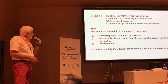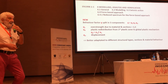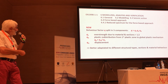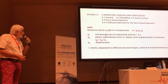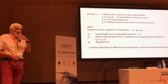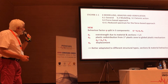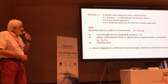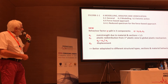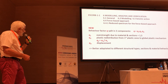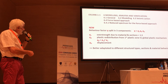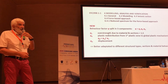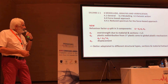Something new is that the behavior factor q is now split into three components: qs, qr, and qd. qs reflects the over-strength due to material and sections, with a standard value equal to 1.5. qr represents the effect of plastic redistribution from the first plastic zone to the global plastic mechanism — the well-known alpha_u over alpha_1 from the present Eurocode 8. qd reflects the displacement capacity up to the significant damage state.